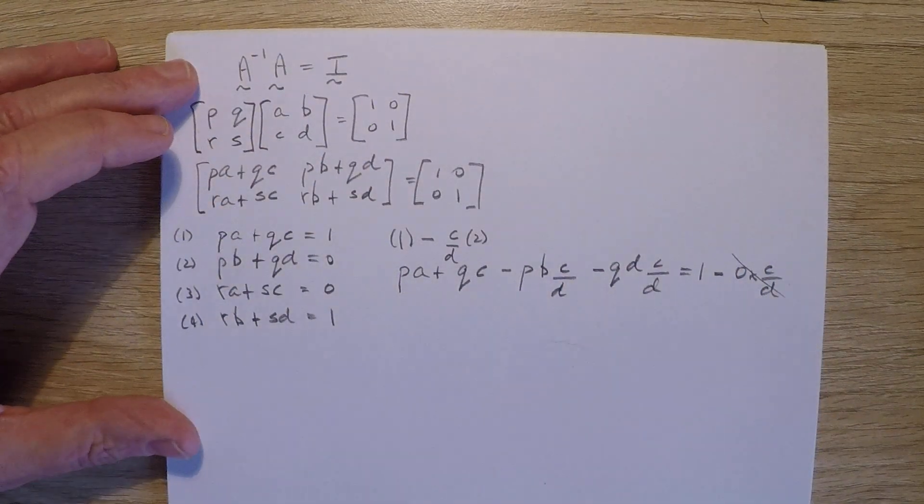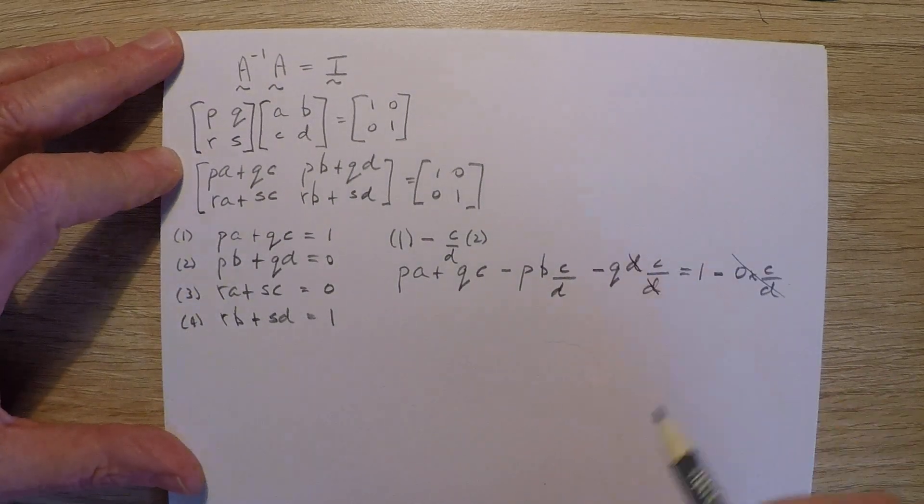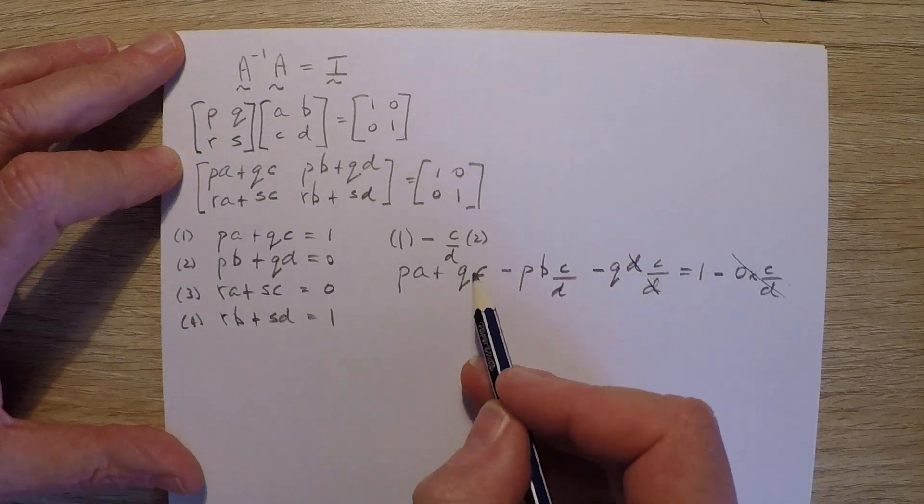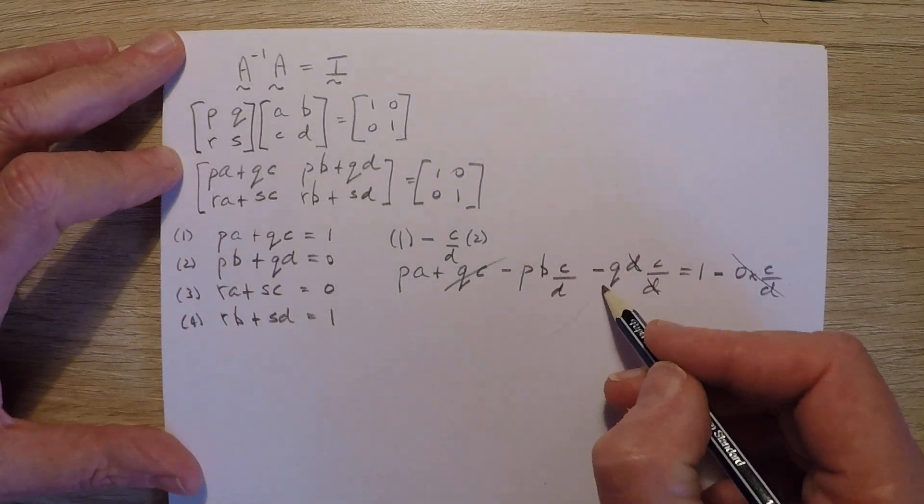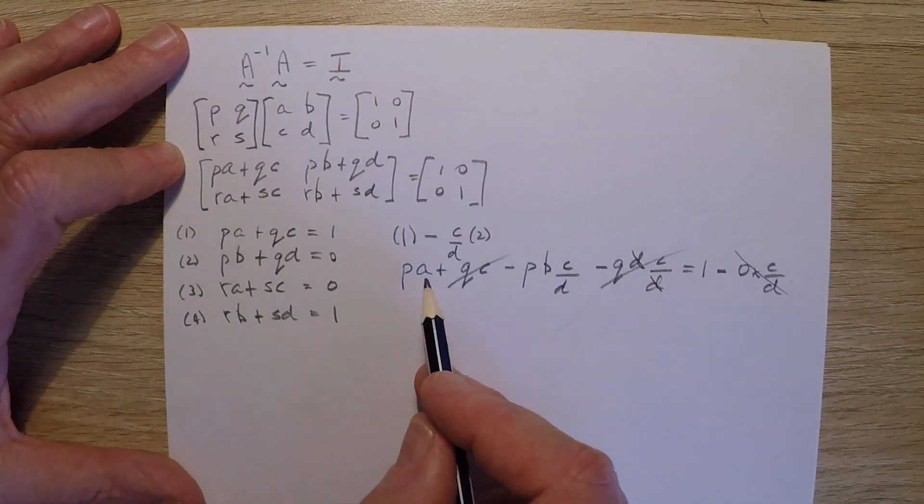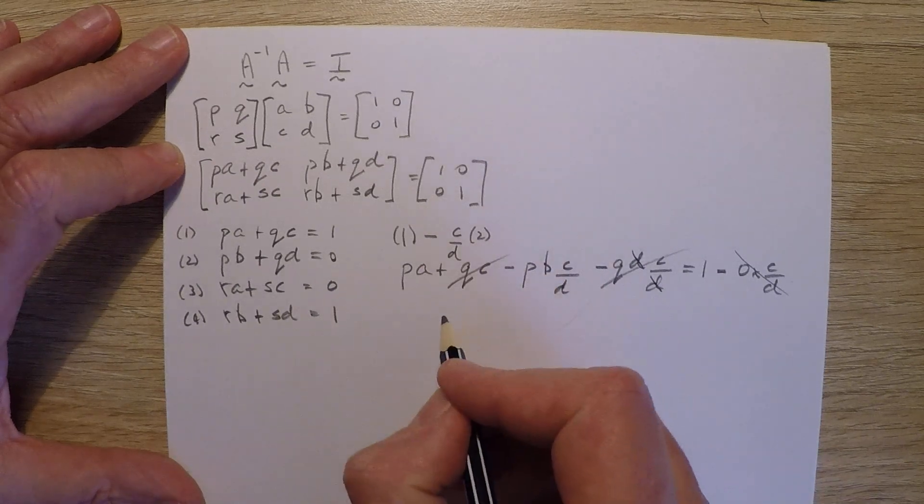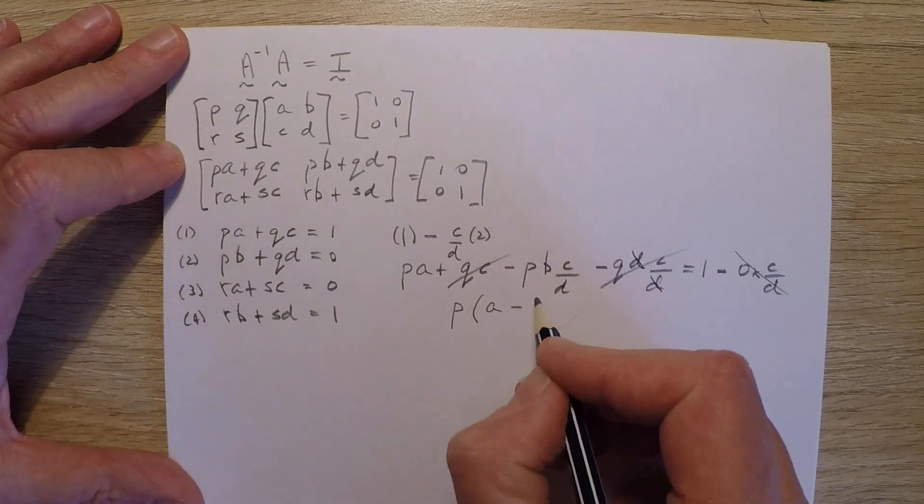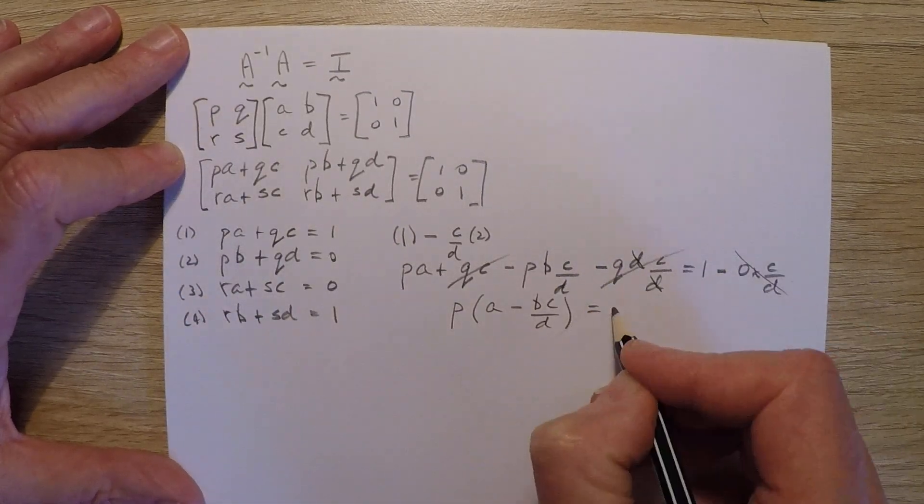So 0 times that doesn't really matter. This is the important bit here. D cancels with D, leaving QC minus QC. I've eliminated the term involving Q. I just have PA minus P times BC over D. So I'll factor the P out, leaving A minus BC over D equals 1.